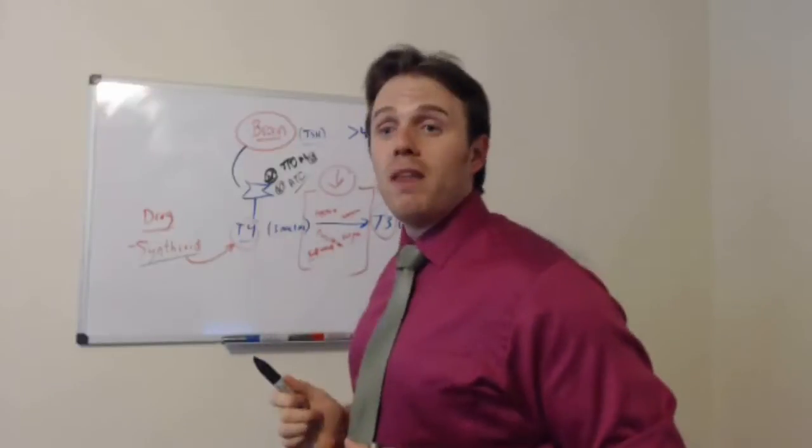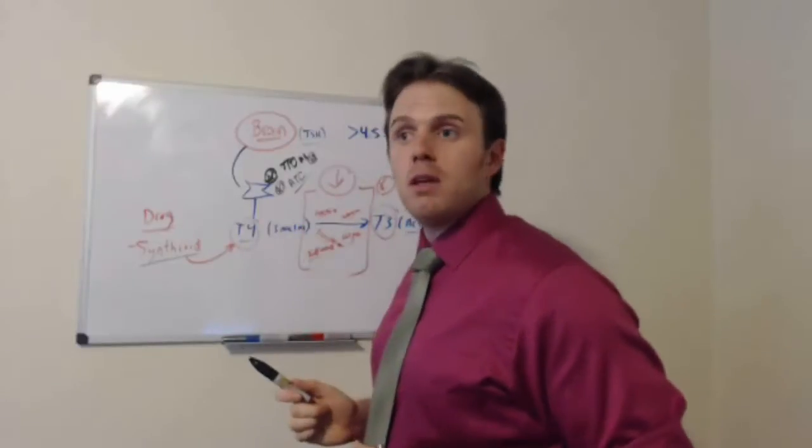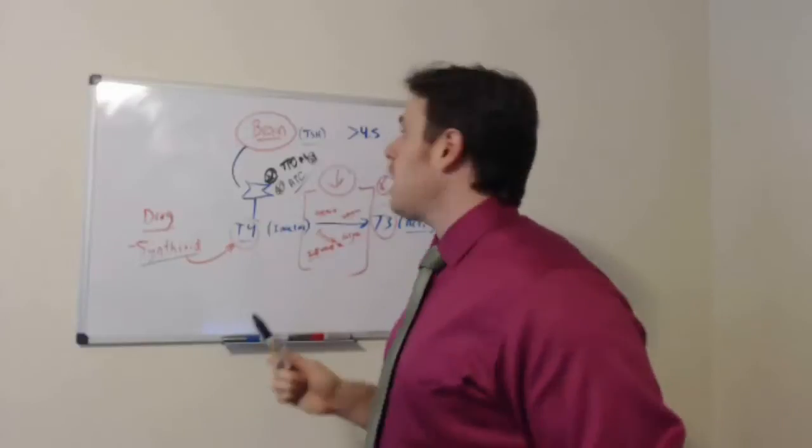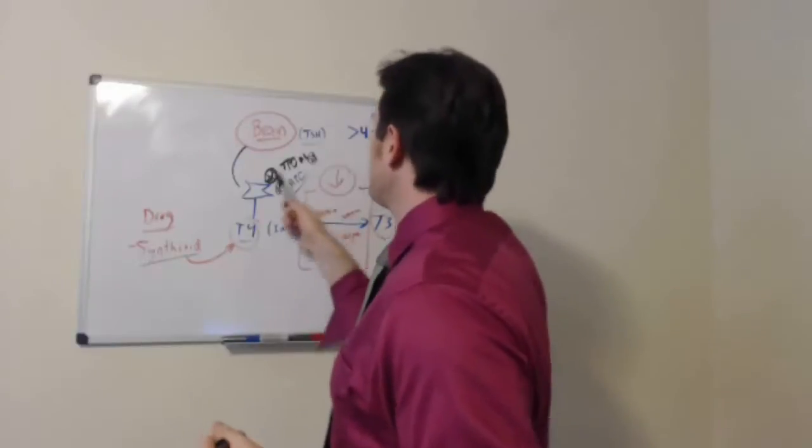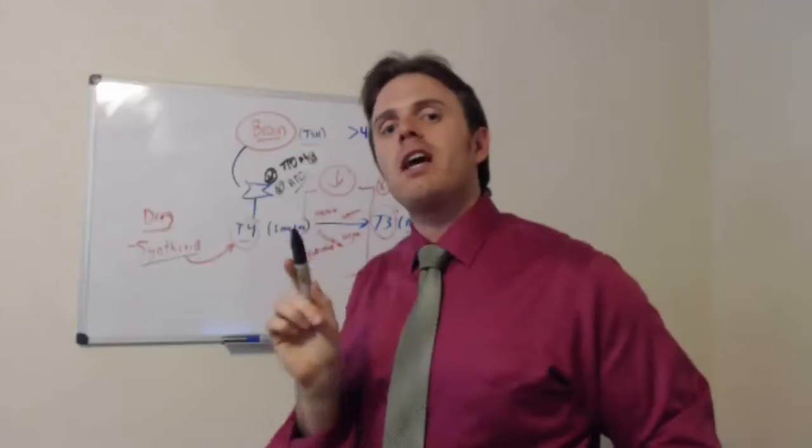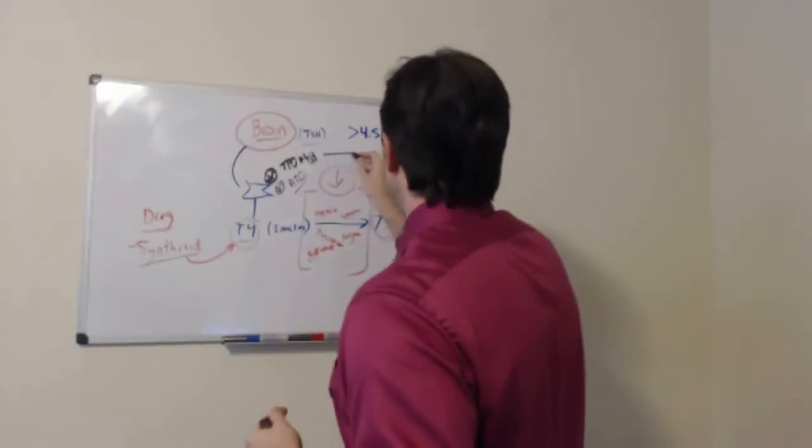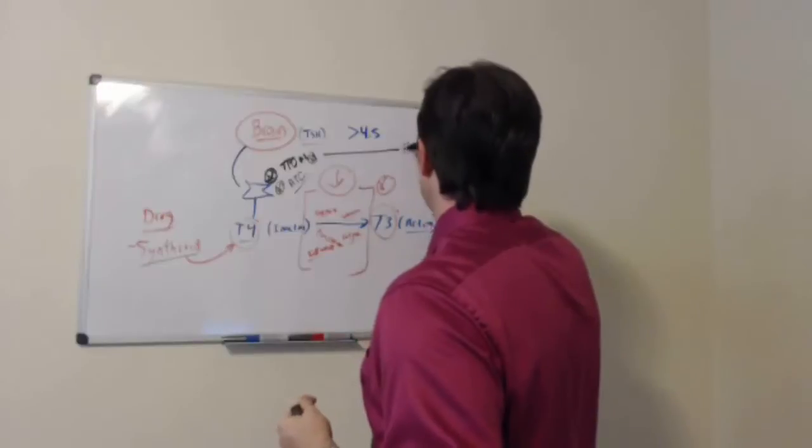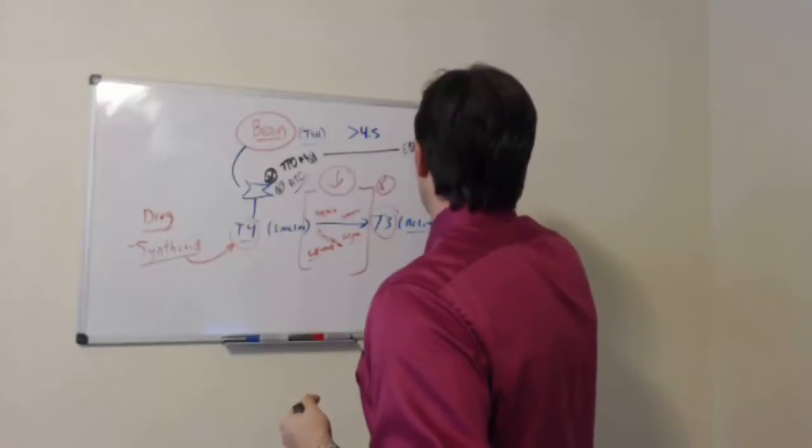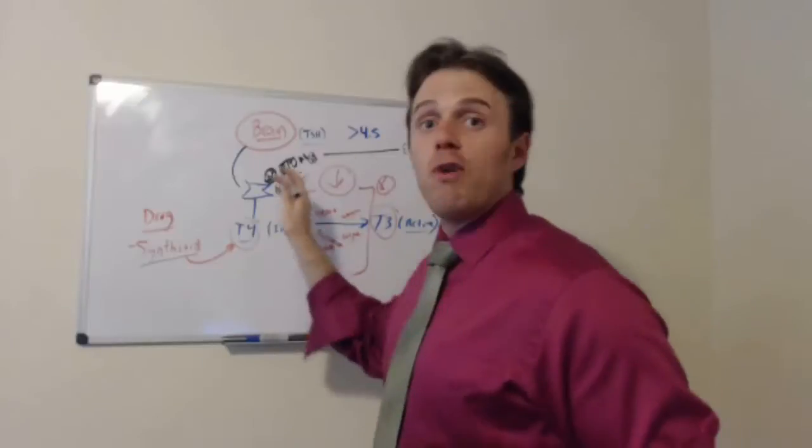So gluten is a big one that affects the autoimmunity, even dairy and leaky gut. So you have to actually fix the autoimmunity. There's actually a couple of infections that can also affect it too. The literature actually shows that Epstein-Barr or mono, the kissing disease, that can actually create autoimmunity.